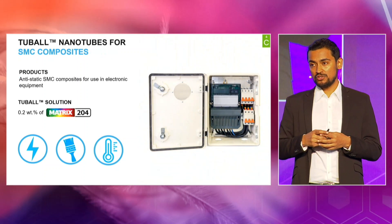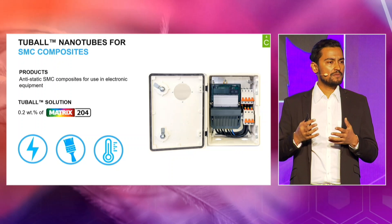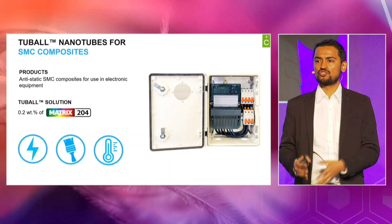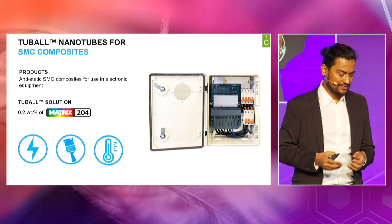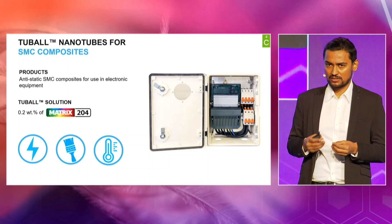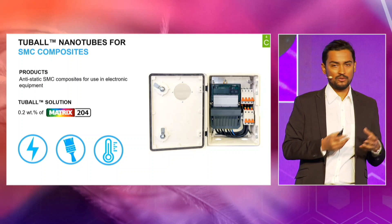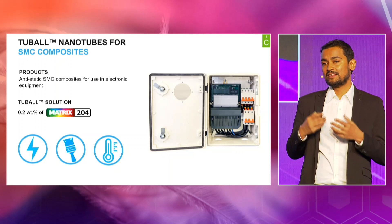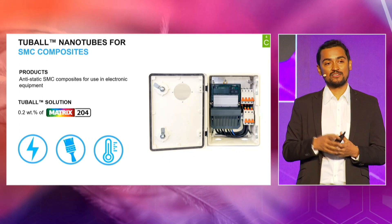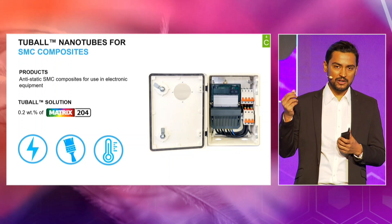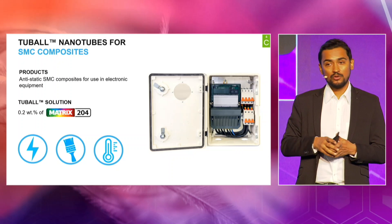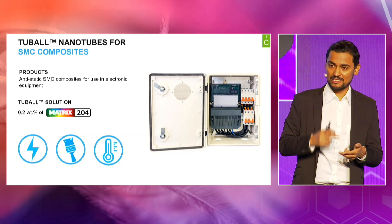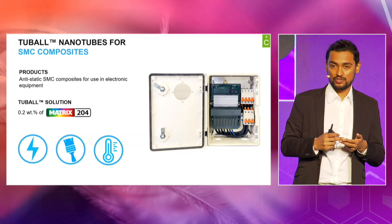For SMC composites — such as junction boxes or housing assemblies installed in oil and gas environments or scrubbers that remove dust from air — these need to be anti-static, otherwise there would be huge sticking of dust particles to the SMC composite. You can make SMC composites colorful as well as permanently conductive with Tuball.